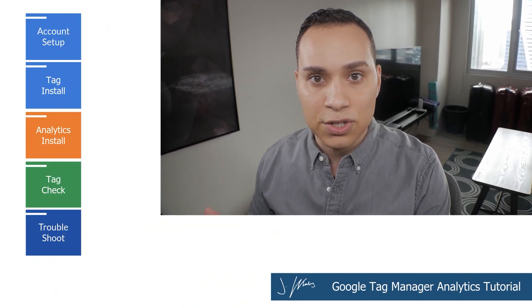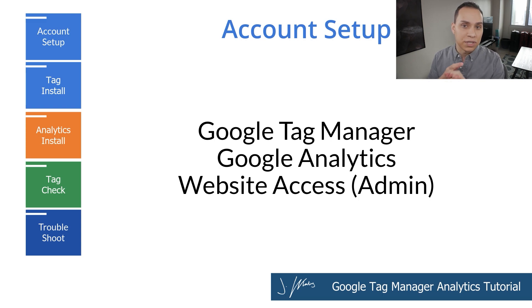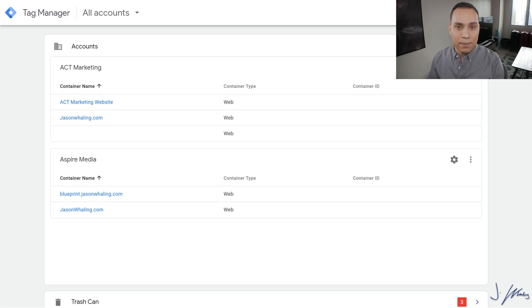The first thing we need to do is make sure that we have everything we need to get started installing tag manager and Google Analytics. All you need is a tag manager account, which is free, and an analytics account, which is free, and administrative access to the site that you want to put the tag on, which most likely isn't free, but at least the first two are. If you don't already have an account, you can just Google search Google Tag Manager and set up an account for free.